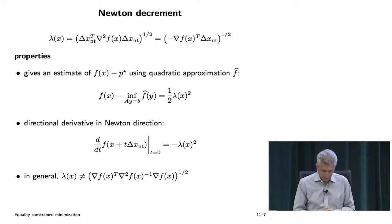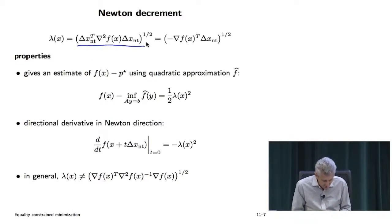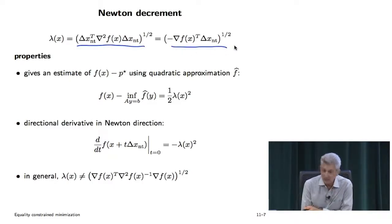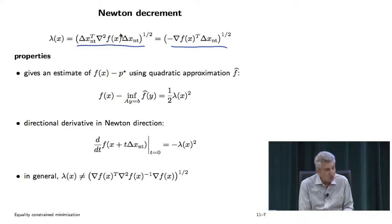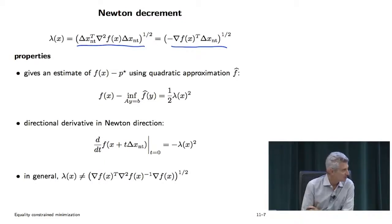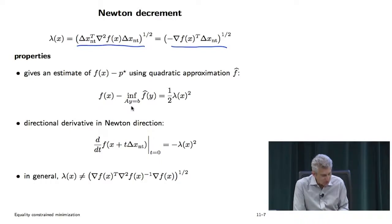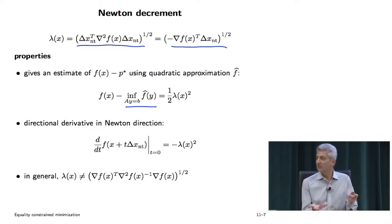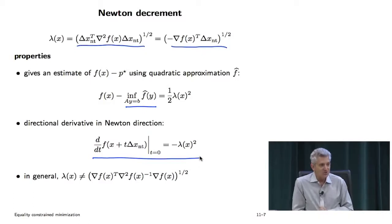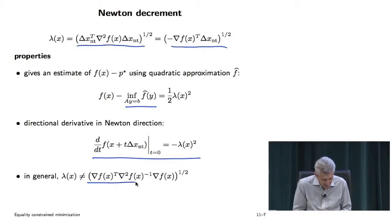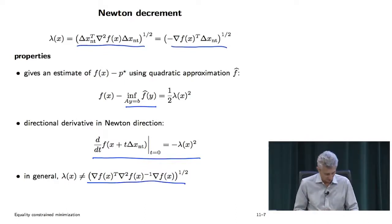The Newton decrement can be written several ways. By the way, some other formulas for the Newton decrement are completely false in the equality-constrained case — one formula involving delta_x_Newton transpose times the inverse is wrong. So you have to be careful: a couple of the formulas you know for the Newton decrement are correct, others are wrong. The Newton decrement gives you an estimate of how much the objective goes down if you form the quadratic model, solve the constrained problem — that's lambda-squared over two. It's also the directional derivative in the Newton direction.